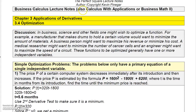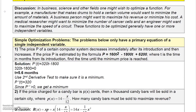Now that we understand some applications of derivatives, let's get into some really neat applications involving optimization. Optimization is where you have a relationship between an independent variable and a dependent variable, and you can actually find the value of the independent variable that maximizes the dependent variable. There are business, medical, and scientific applications of these things, and we're going to focus on a little bit of each.